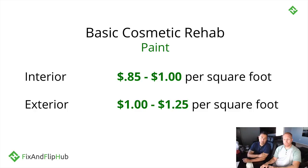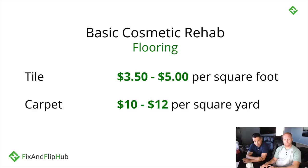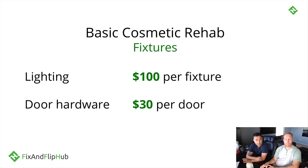For a basic cosmetic rehab, when estimating paint, interior runs 85 cents to a dollar per square foot, and exterior is a dollar to $1.25 per square foot. For flooring, tile runs $3.50 to $5 per square foot, and carpet is $10 to $12 per square yard. For fixtures, light fixtures run about $100 each, and door hardware is $30 per door.